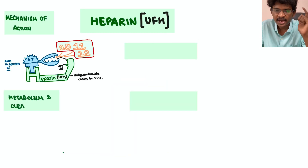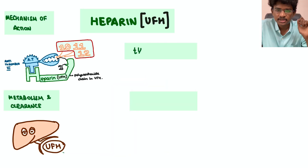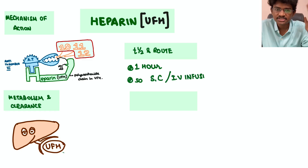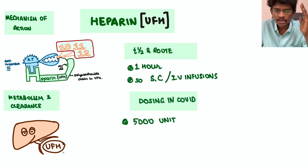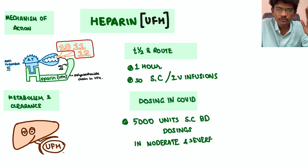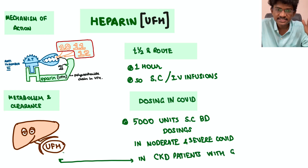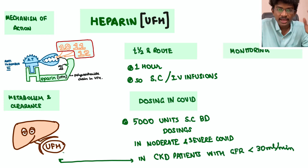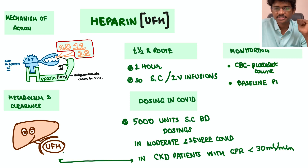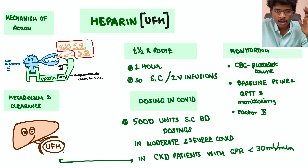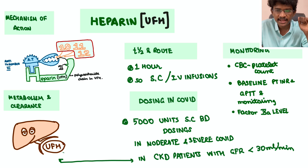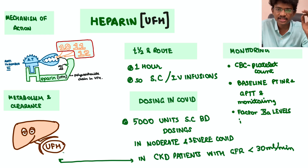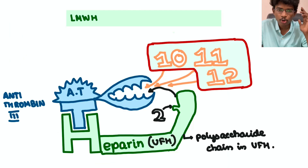UFH has a half-life of just one hour, so it is given by IV infusion or subcutaneous injection. In moderate and severe COVID patients with CKD where eGFR or creatinine clearance is less than 30, we always prefer unfractionated heparin since it is liver-cleared. Monitoring requires aPTT, PT/INR, and anti-factor Xa activity if possible.